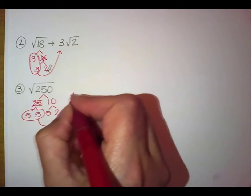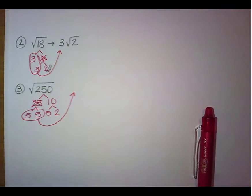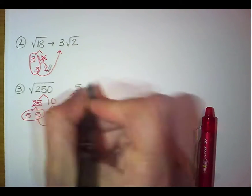Again, only one of those 5s gets to come outside. So we're going to take our 5 out. Square root.